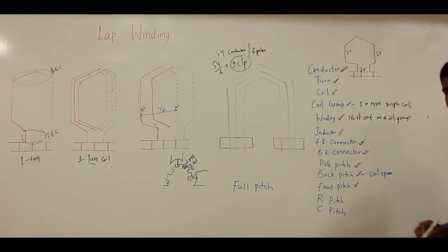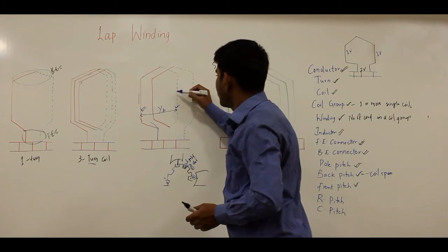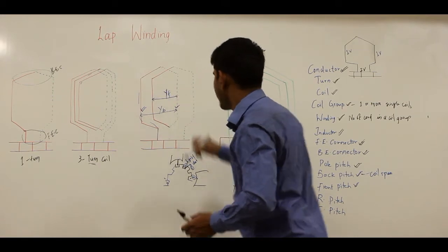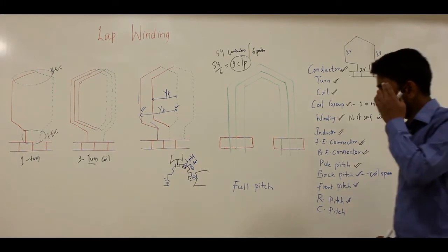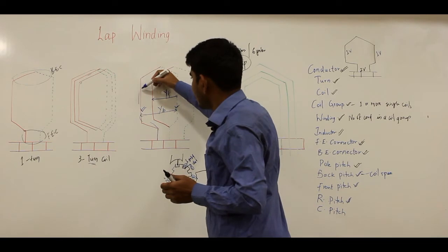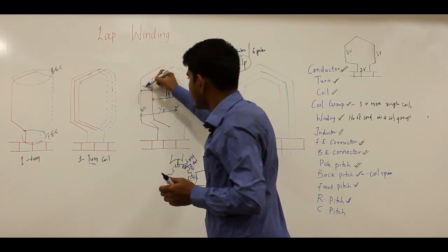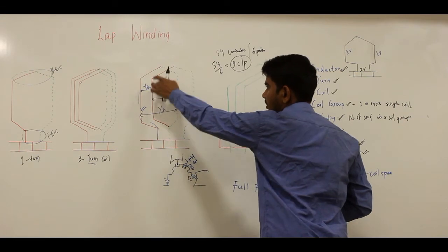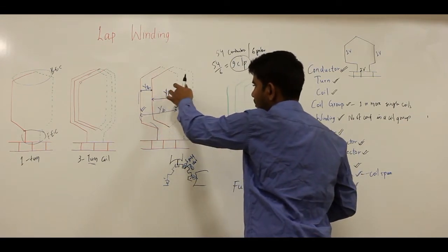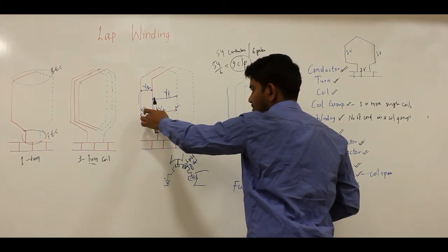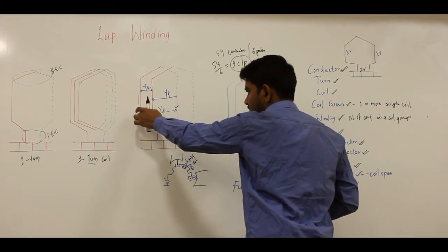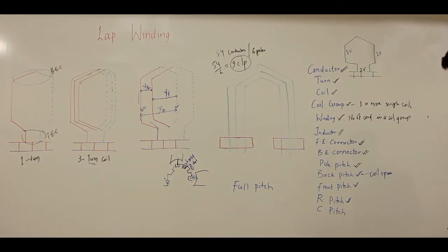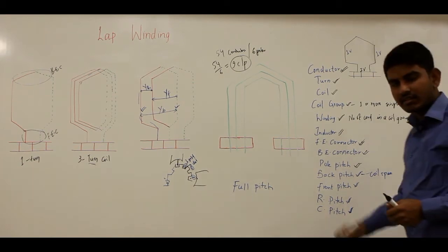Front pitch (YF) is defined as the distance in terms of armature conductors from the finishing side of one coil to the starting side of the next coil. Resultant pitch (YR) is the distance from the starting side of one coil to the starting side of the next coil. Back pitch is also known as the coil span — the distance from the starting side to the finishing side of the same coil — while front pitch connects successive coils.